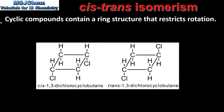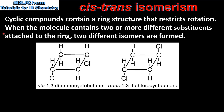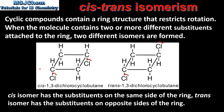Next we look at cyclic compounds. Cyclic compounds contain a ring structure that restricts rotation. When the molecule contains two or more different substituents attached to the ring, two different isomers are formed. Here we can see the two isomers of 1,3-dichlorocyclobutane. The cis isomer has the two substituents on the same side of the ring, and the trans isomer has the two substituents on opposite sides of the ring.